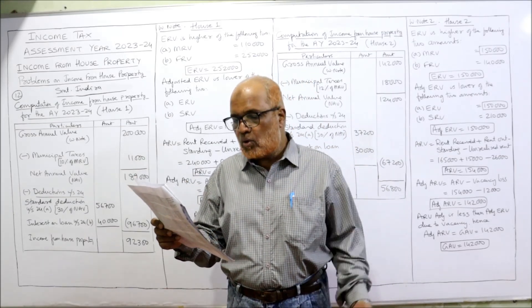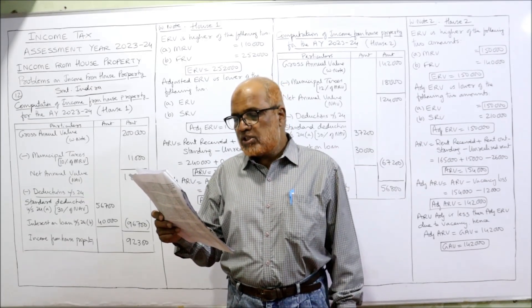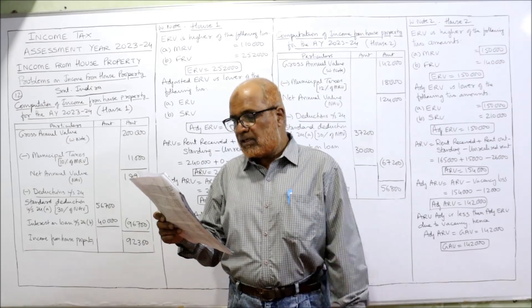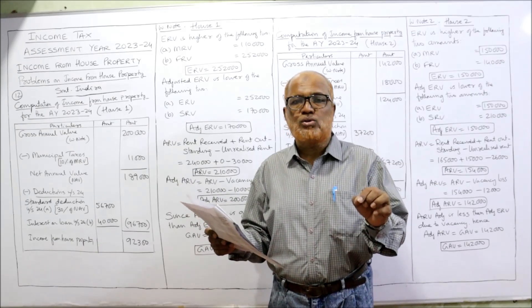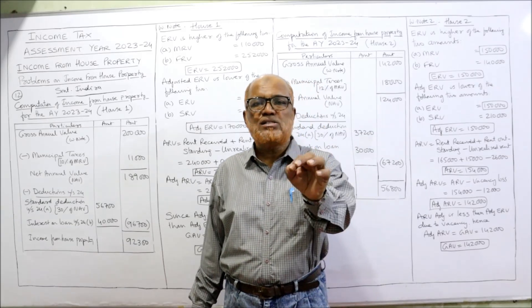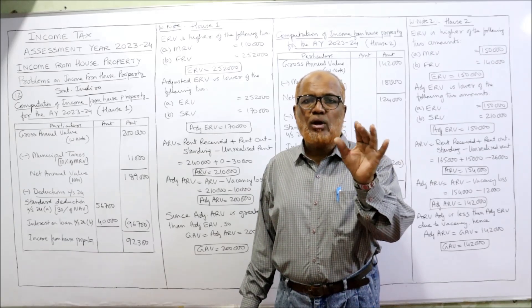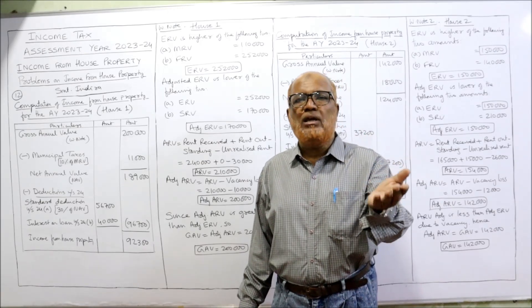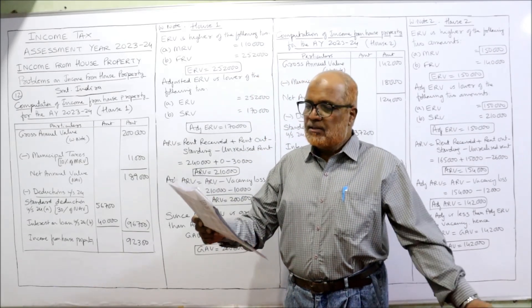Outstanding rent: none for the first house, but 15,000 for the second house. The second house is purchased for 1,40,00,000 and part payment is made to the vendor. Interest due of 30,000 is outstanding. The Income Tax Act says even if interest is due but not paid, it will be allowed as a deduction. Only for municipal taxes is payment basis required; interest on loan is allowed whether paid or outstanding.